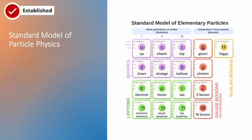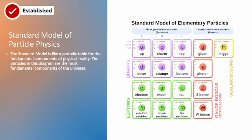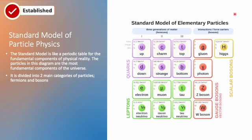This diagram you're looking at is the standard model of particle physics. The standard model is like a periodic table for the fundamental particles that exist in the universe. The particles in this diagram are the most bedrock components of physical reality. The standard model is divided into two main sections: fermions, which are on the left, and bosons, which are on the right.